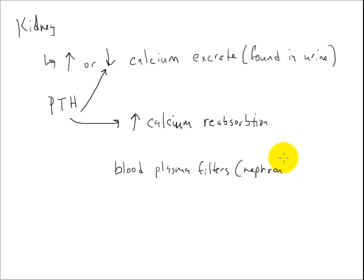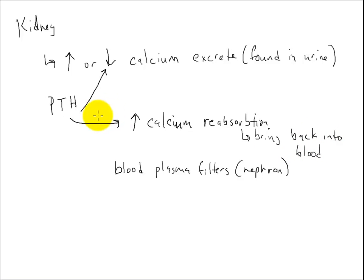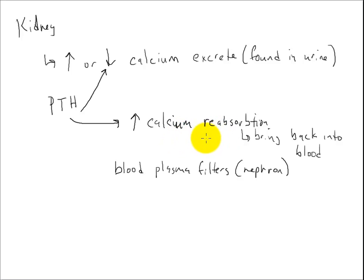All the plasma is put into the kidney, and it decides whether to reabsorb — meaning bring back into the blood — or just excrete it. In the case of PTH, it's telling the kidneys to bring that calcium that was just filtered out back into the blood. This is most likely due to an increase in either the number of transporters in the nephron or causing them to function better.